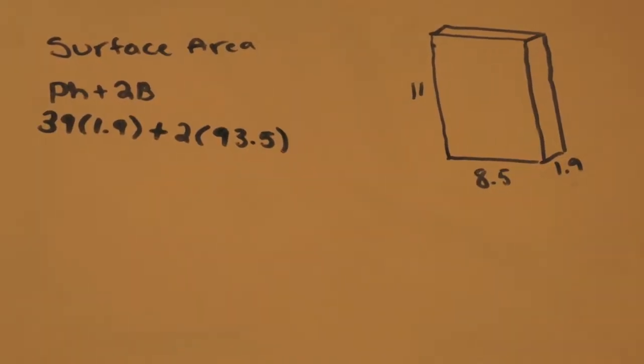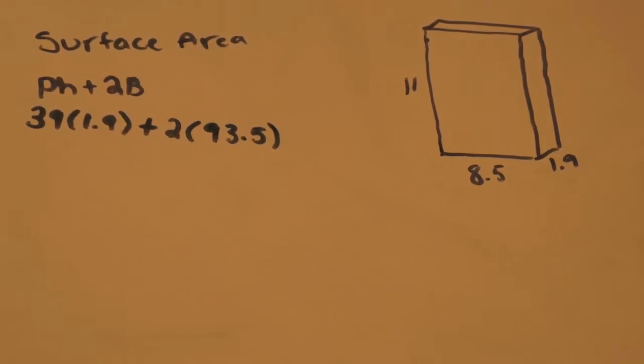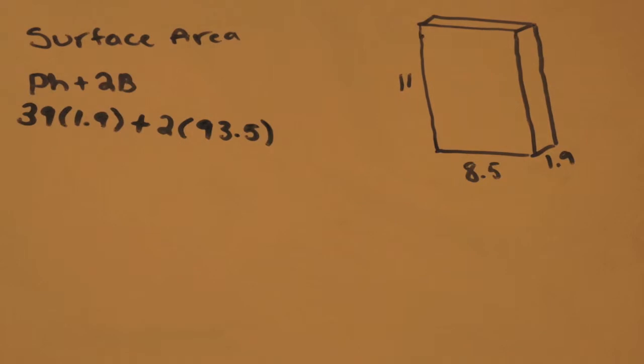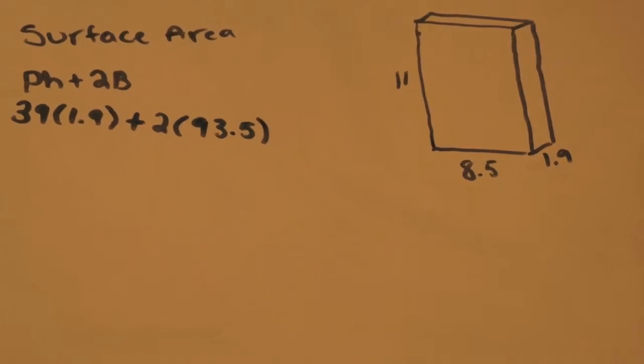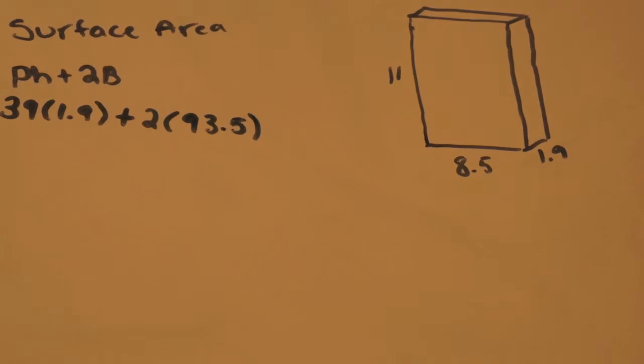I am making the 8.5 inches by 11 inches side my base. So I know that the perimeter of the base is 39 inches, I know that the height is 1.9 and I know that the area of the base is 93.5 inches squared.